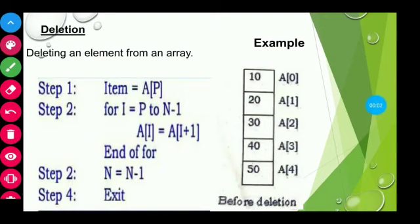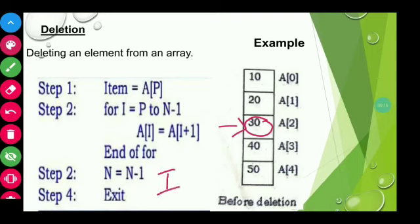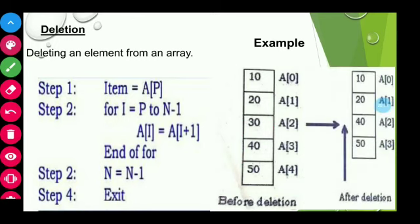Consider this example: this array contains 5 elements. Suppose I want to delete the element present at position a[2]. The first step is to delete this element and copy it to another variable, that is item = 30. After that, all the elements present below this position will be shifted to their lower order positions — 40 will be shifted to a[2], 50 will be shifted to a[3]. After deletion, the array size will be decremented by 1.